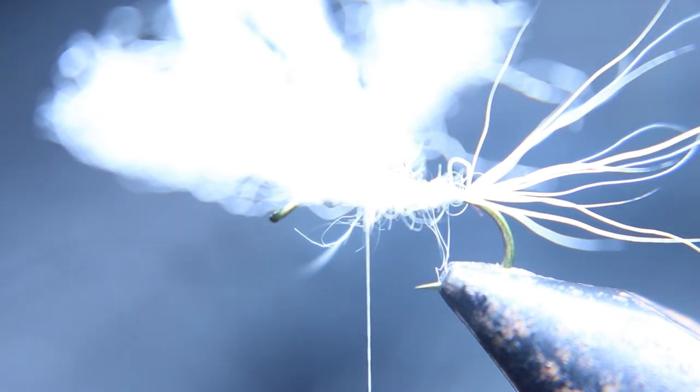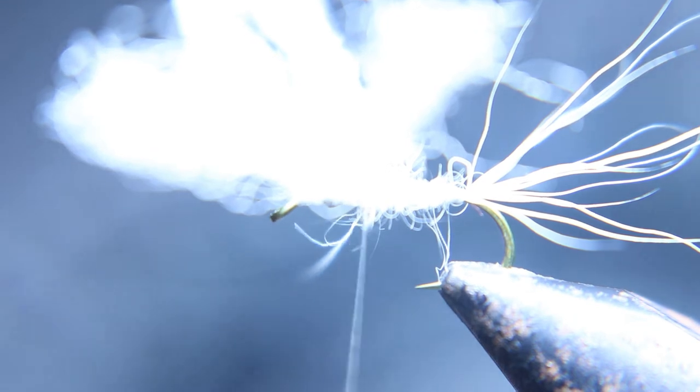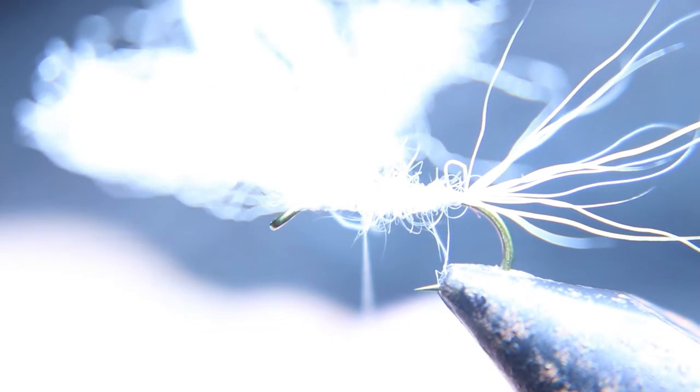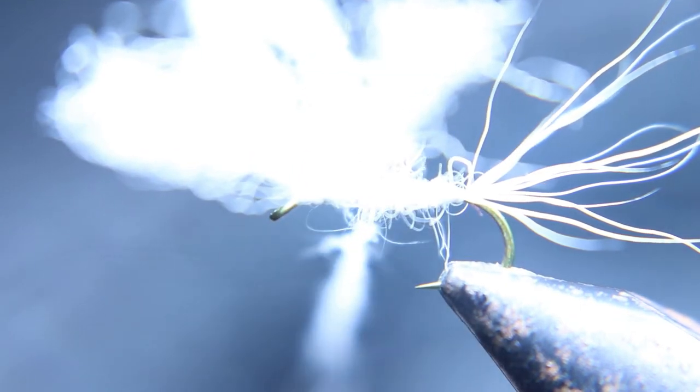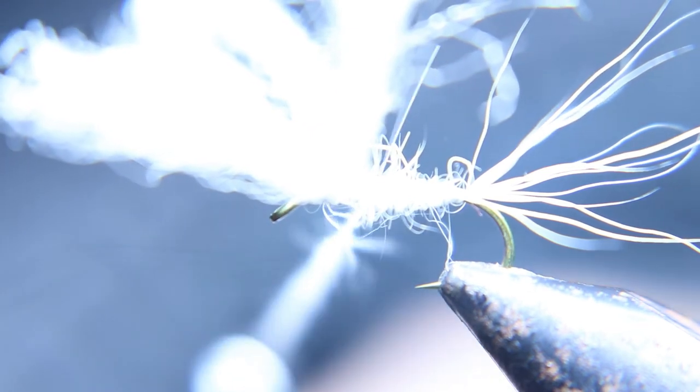Now you're going to trim off all them guard hairs that stick out way too much, at least I do. I fish this when the sun goes down late at night about this time of the year. You can see it at night and then it kind of looks like a drake or any of the big drakes.